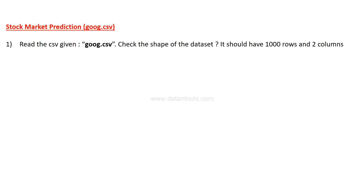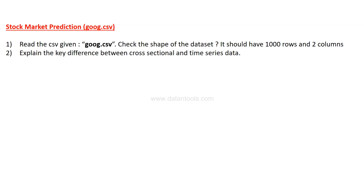The first question is to read the CSV file, goog.csv. You need to check the shape of the dataset — it should have 1000 rows and two columns, so if a serial number column is present, drop or ignore it. Then explain the key difference between cross-sectional data and time series data. By now you should recognize this is time series data — this is also a question that comes up in interviews.